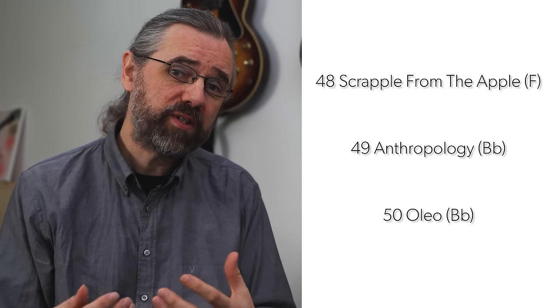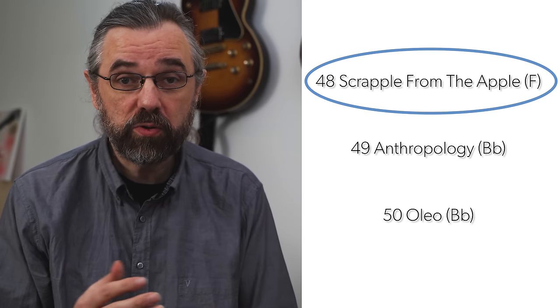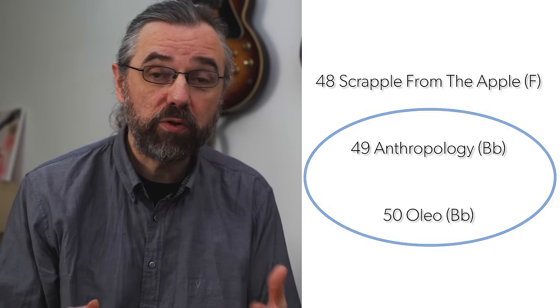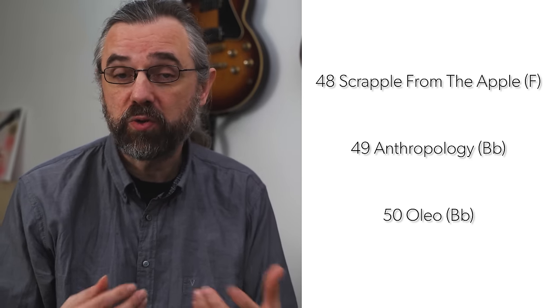We also need some bebop pieces, and I have three spots left on my list of 50 standards: Scrapple from the Apple, Anthropology, and Oleo. I'm focusing on bebop pieces built on common forms — Honeysuckle Rose for Scrapple from the Apple, and then two Rhythm Changes tunes. Those forms are really important to know because there are a lot of other bebop themes on them. And of course many bebop themes covered earlier in the blues section are also written on a 12-bar blues.